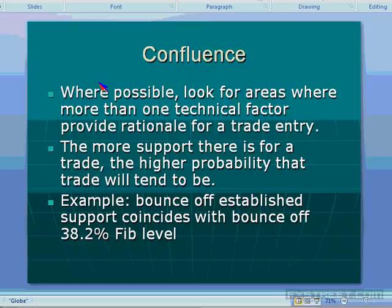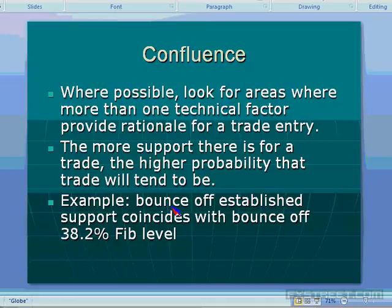Confluence is another primary trading principle. Where possible, I look for areas where more than one technical factor provides rationale for a trade entry. The more rationale there is for a trade, the higher probability I believe that trade will tend to be. For example, a bounce off established support that coincides with a 38.2% Fibonacci level — and if that also coincides with a pivot point, then that's a higher probability trade.